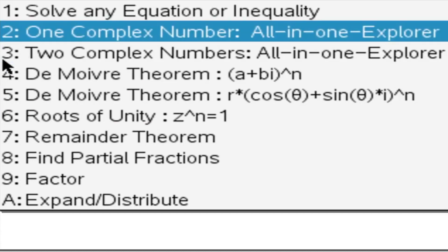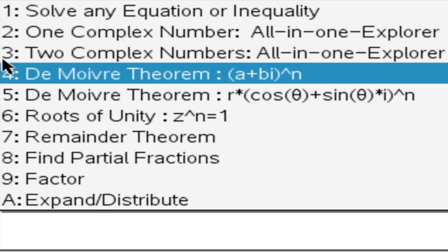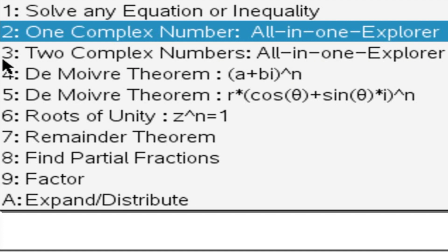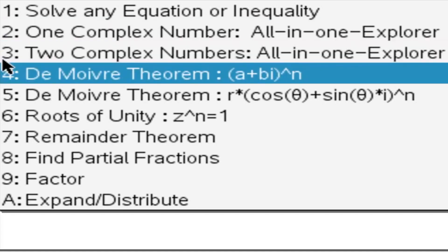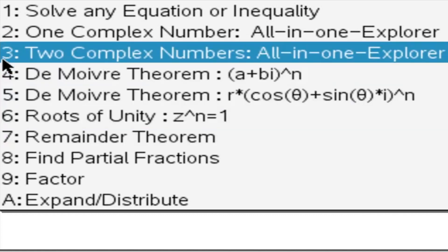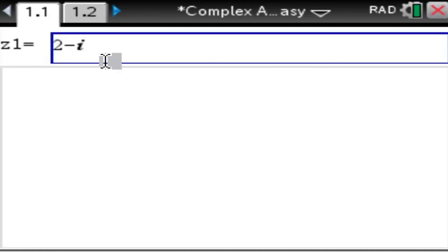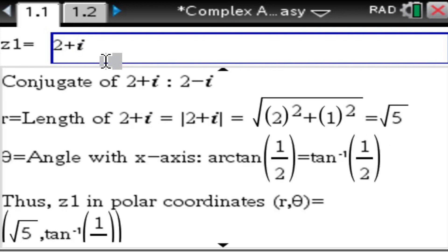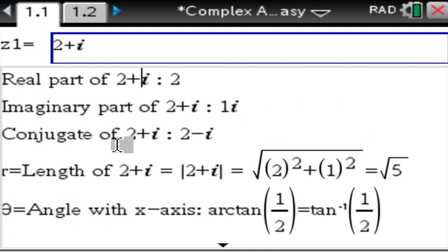So let's start off with the first section. You can see we can analyze complex numbers, one or two, de Moivre's theorem, roots of unity, remainder theorem, partial fractions, etc. Let's analyze a complex number such as 2 plus i. Everybody knows the real part is 2, the imaginary part is just i.